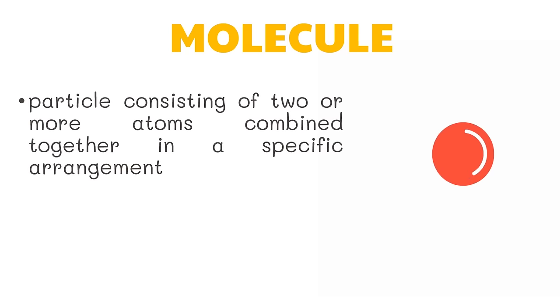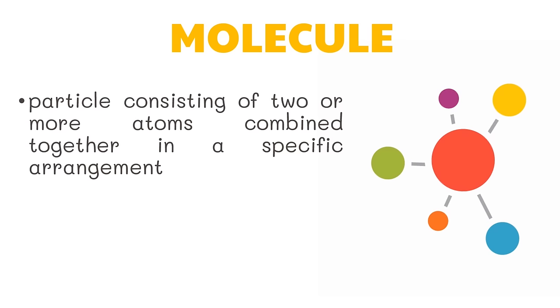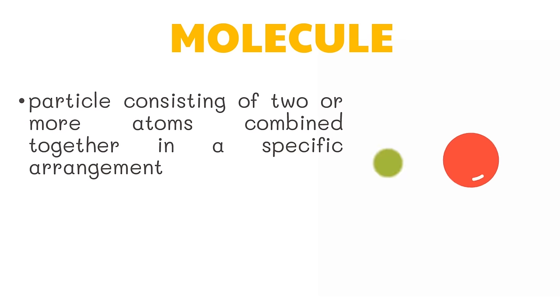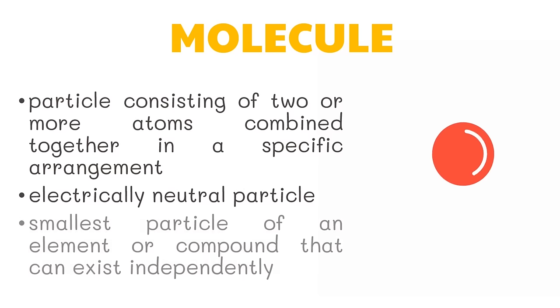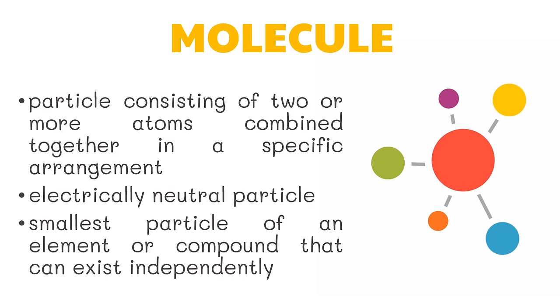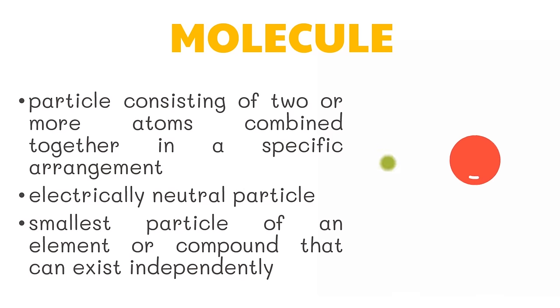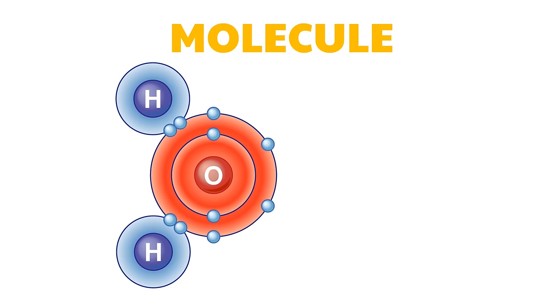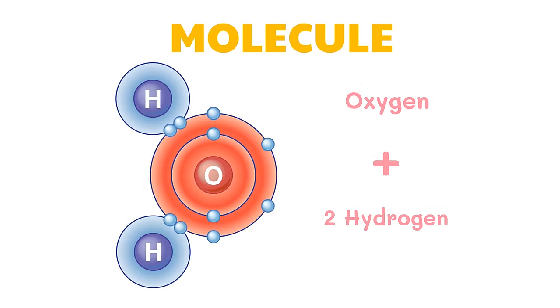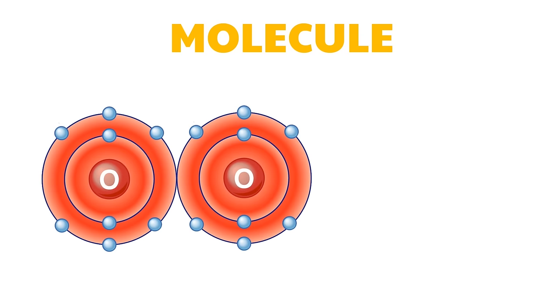A molecule is a particle consisting of two or more atoms combined in a specific arrangement. It is an electrically neutral particle and is the smallest particle of an element or compound that can exist independently. For example, a molecule of water consists of an oxygen atom combined with two hydrogen atoms. Atoms of the same element can also combine to form a molecule — for example, oxygen in the air consists of oxygen molecules made up of two oxygen atoms.